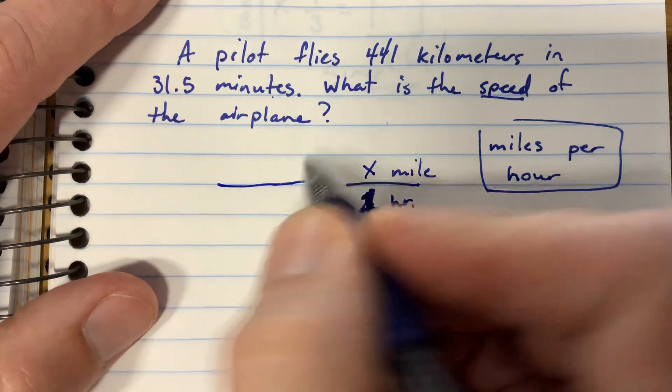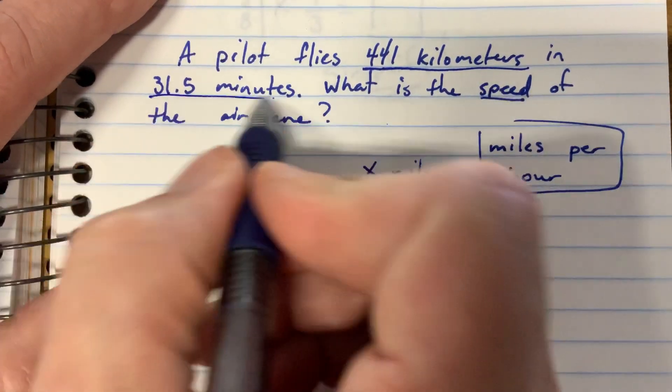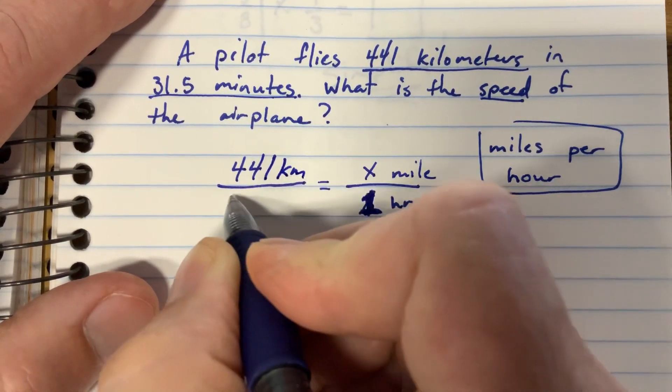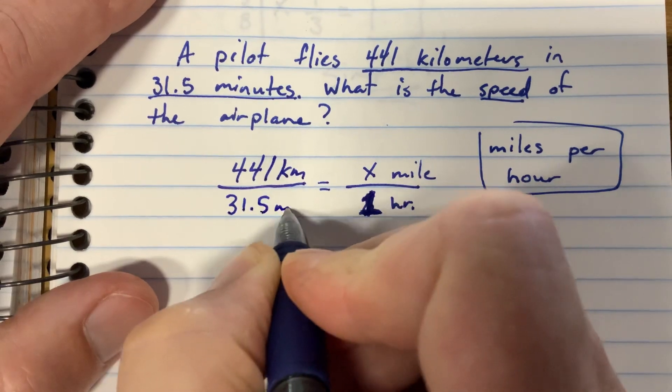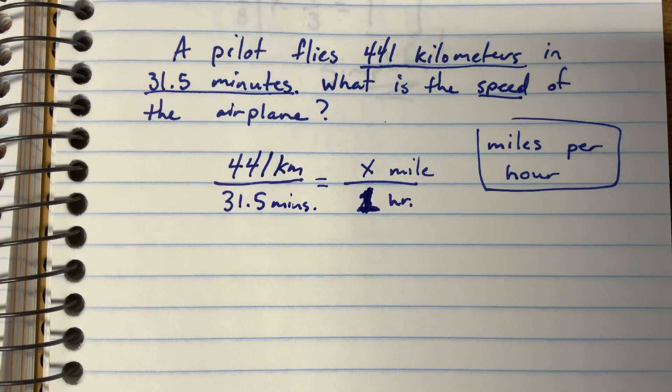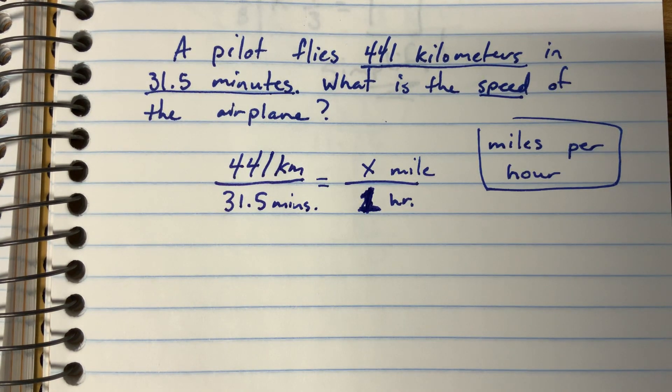What do we know here? We know this plane went 441 kilometers in 31 and a half minutes. Normally you got enough for our proportion. We cross multiply and divide, except we have a problem here. Can you look at this proportion and see what issue we have?